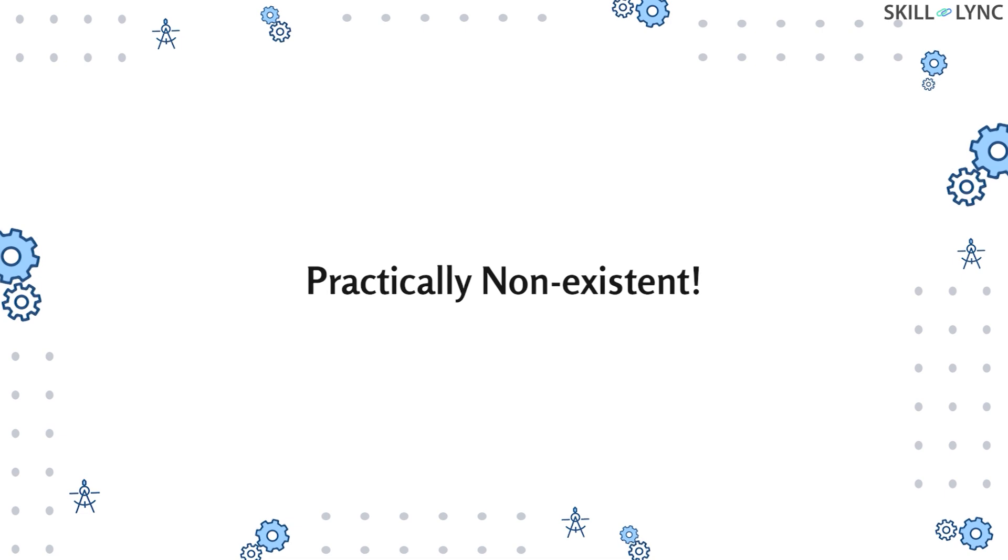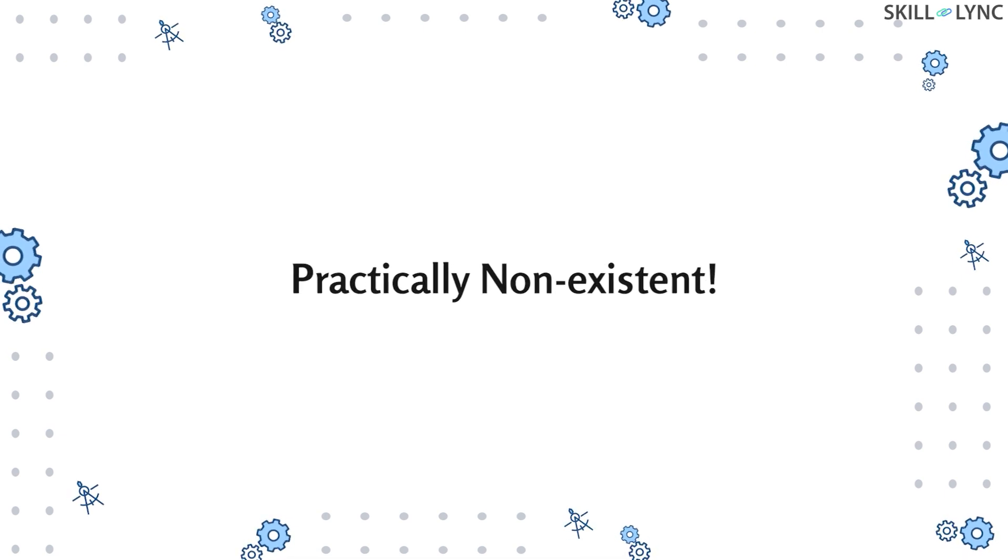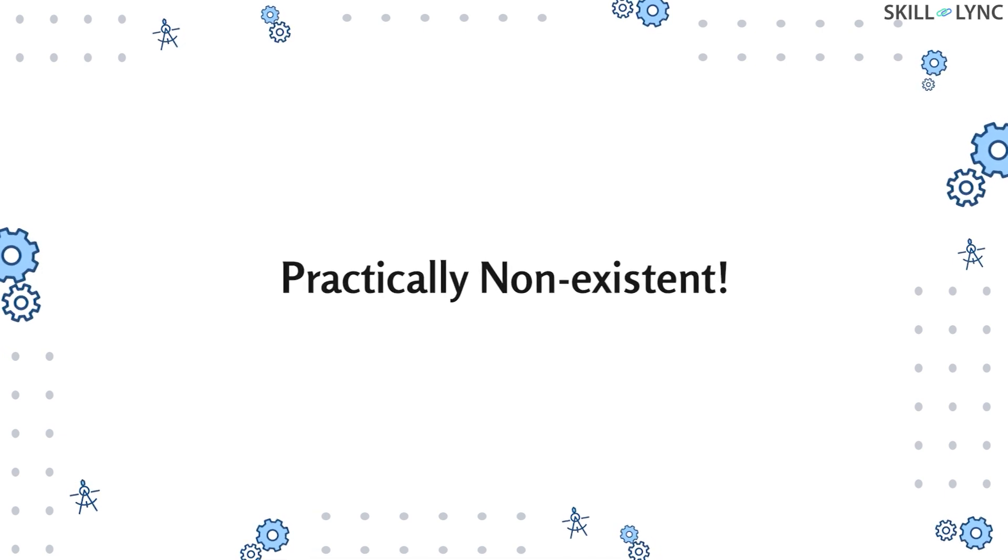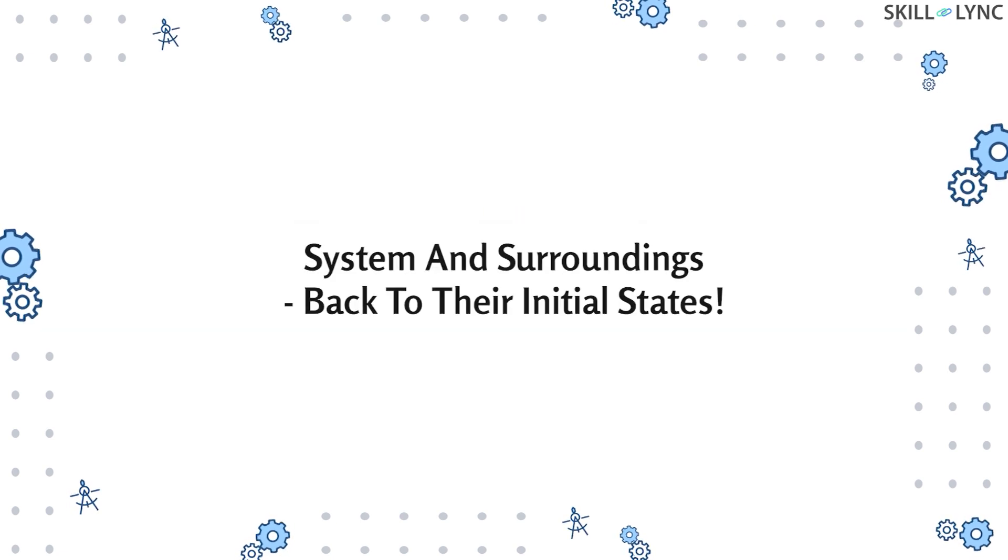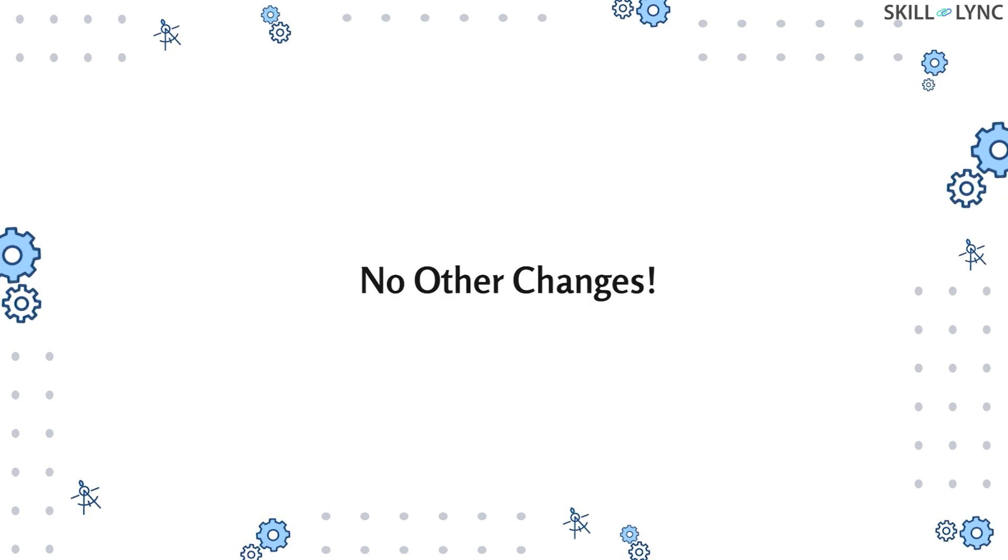Now let's discuss what is reversible and irreversible process. In thermodynamics, a process is said to be reversible if it can be reverted such that system and surroundings get back to their initial states. There should be no other change anywhere else in the universe.